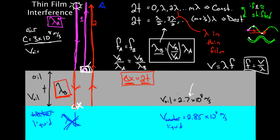What if you're not given the speed? Sometimes they give you the index of refraction instead. If they gave you N in region A and N in region B instead of the speeds, remember the index of refraction is defined as the speed of light in a vacuum divided by the speed of light in that material. So N_A equals c divided by the speed in A, and N_B equals c divided by the speed in B.